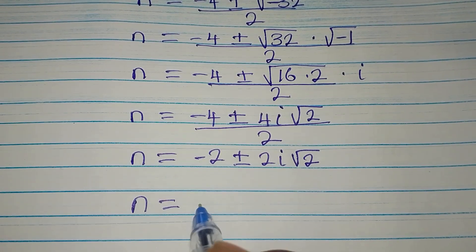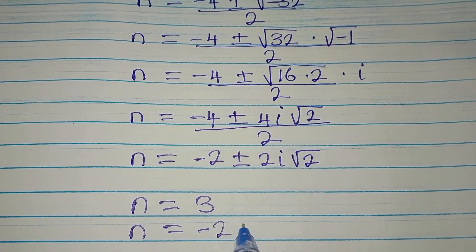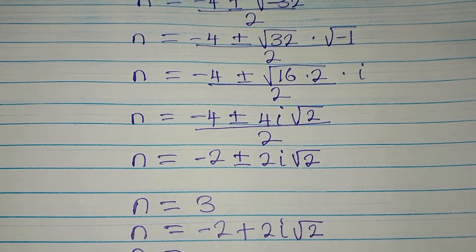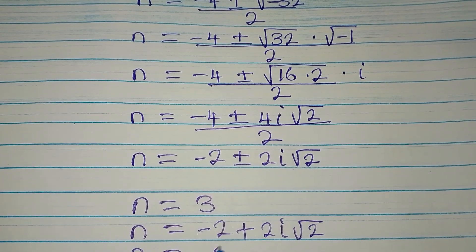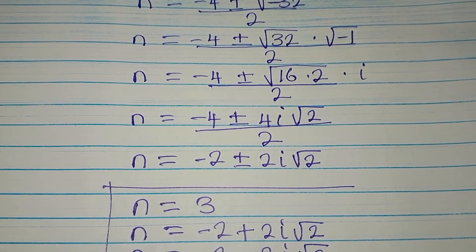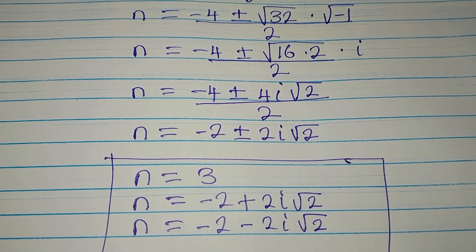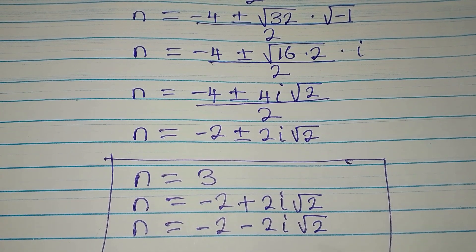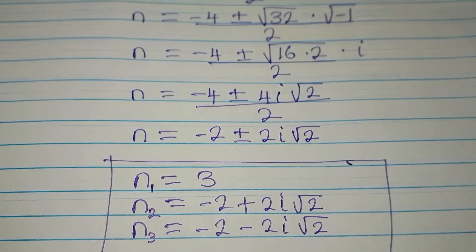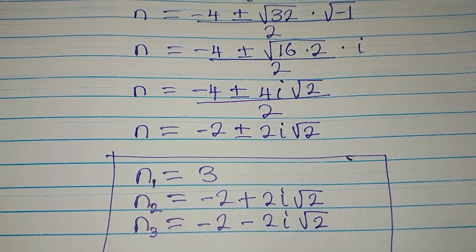Let's bring all three solutions together. n₁ equals 3, n₂ equals minus 2 plus 2i root 2, and n₃ equals minus 2 minus 2i root 2. These are the solutions to the equation. If you have not subscribed, subscribe for more videos.